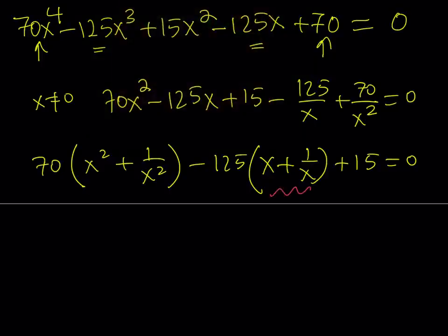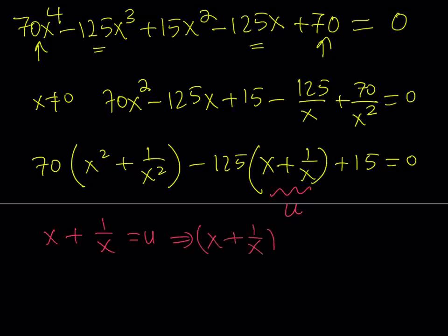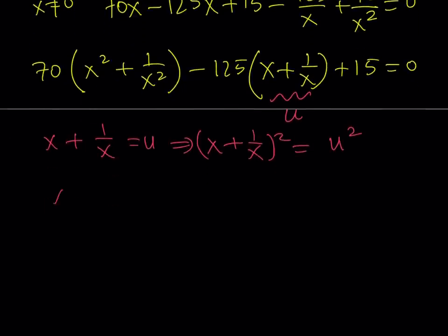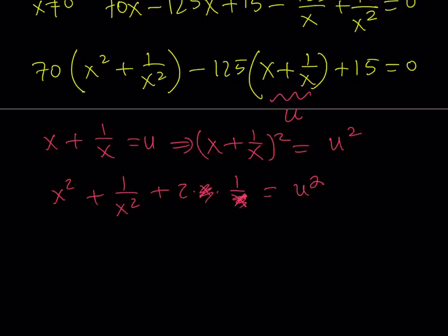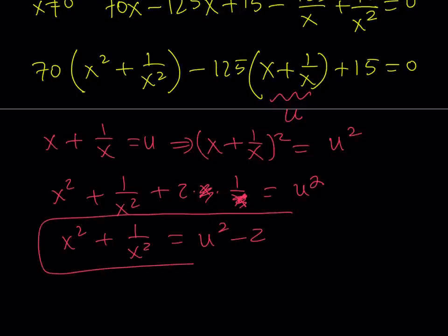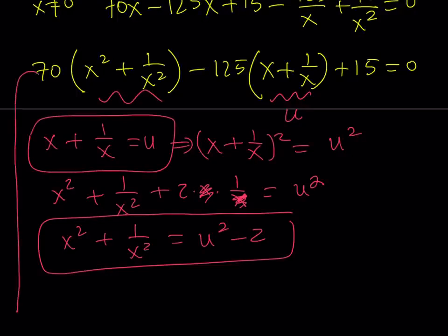Let me explain what I mean. I'm going to call u = x + 1/x. If I square both sides, I get u² = x² + 1/x² + 2·(x·1/x), which equals x² + 1/x² + 2. So x² + 1/x² = u² − 2. Now we can substitute that into our equation.